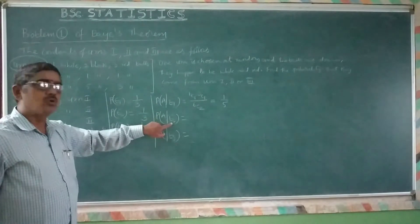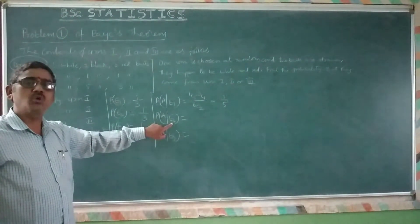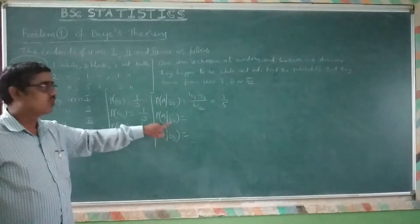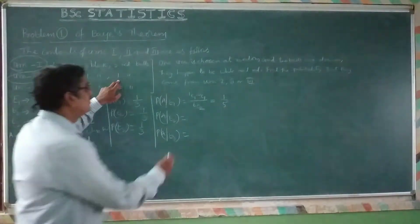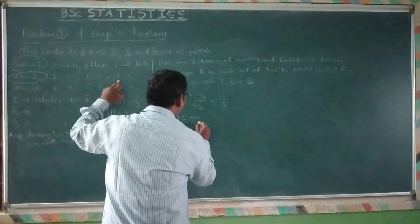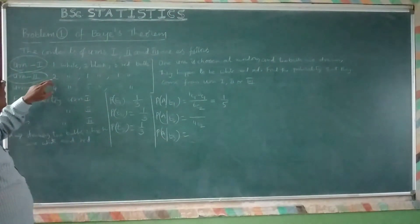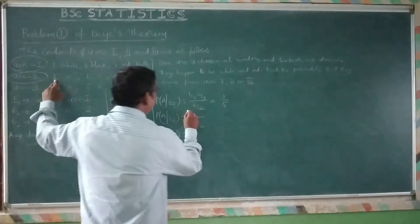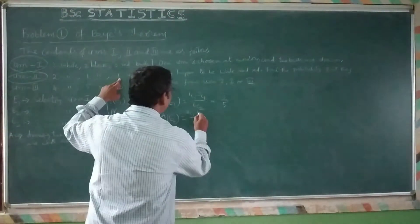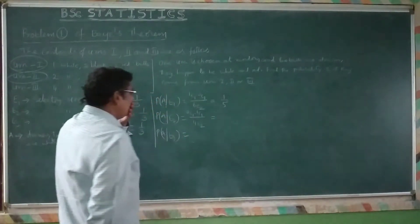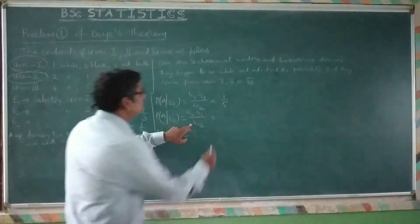Similarly, probability of A given E2. E2 means Urn 2 is already selected. Total number of balls: 2 + 1 + 3 = 6. Wait — 4C2 ways in total. We select 1 white ball from 2: 2C1 ways. One red ball: 1C1. So probability is (2C1 × 1C1) / 4C2 = 2/6 = 1/3.